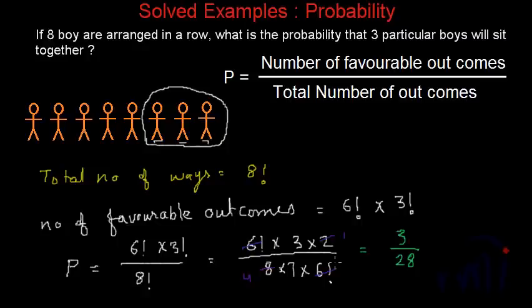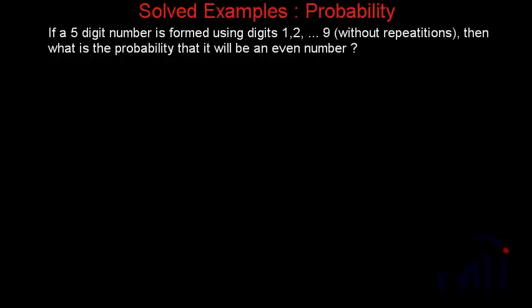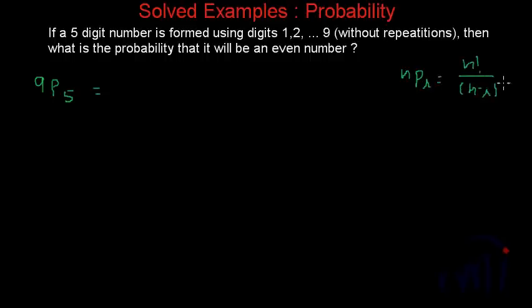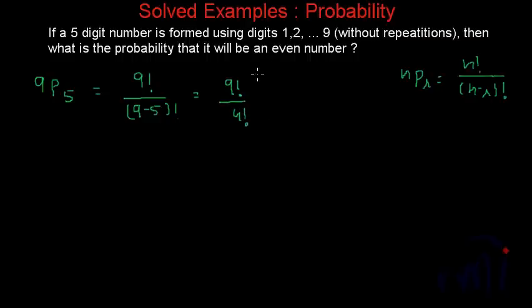That was the second problem. Now we have one more problem. If five-digit numbers are formed using digits one through nine without repetition — without repetition is very important — what is the probability that it will be an even number? The total number of five-digit numbers that can be formed using these nine digits is nine P five. The formula for nPr is n factorial divided by n minus r factorial, so this equals nine factorial divided by four factorial.